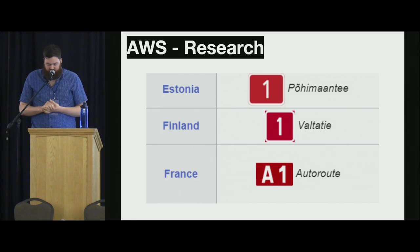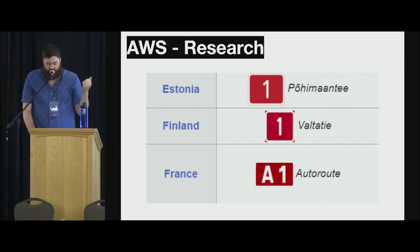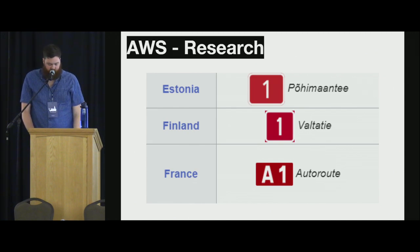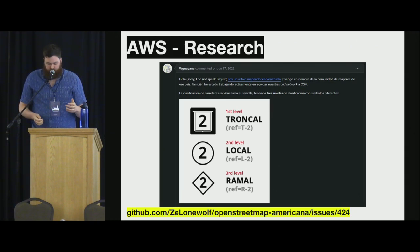Sometimes in our research we'll come across shields that are effectively the same — these three are all red rectangular signs where the text is a little bit different, which doesn't matter since it's dynamically added in the map renderer. So if we've already made the shield for France and then find out Estonia has the same shield, and the Netherlands as well, we can essentially reuse that shield, which makes it go a little bit quicker. And sometimes we'll find amazing documentation by local OSM users — this was a call for Venezuelan highway shield support in the Americana style, and a local user responded with immense detail, great diagrams, and shields.